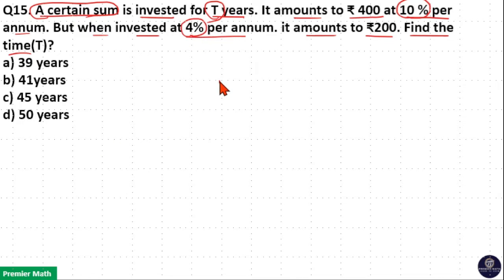At 10% rate, this principal for T years amounts to Rs. 400. But at 4% rate, the same amount at the same years amounts to Rs. 200.